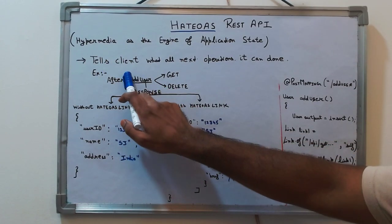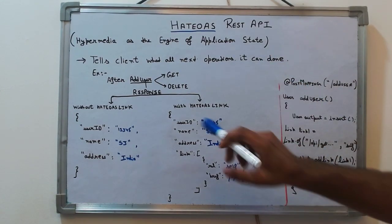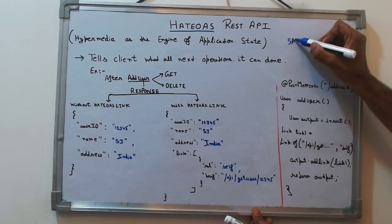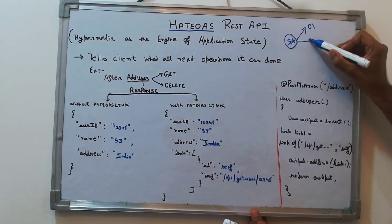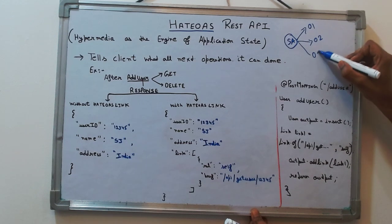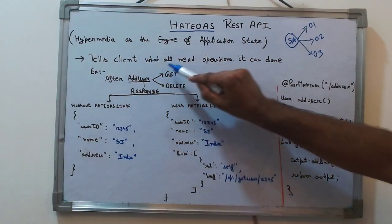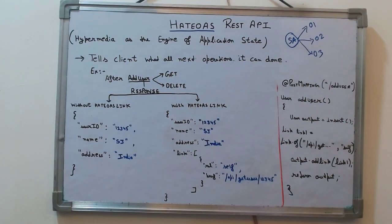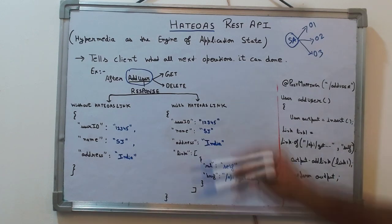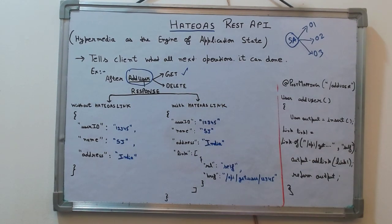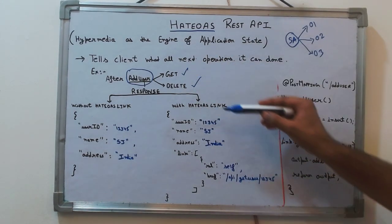In simple terms, HATEOAS tells the client what all next operations can be done. For example, let's say you are at state A — from this state you can perform operation one, operation two, or operation three. After adding a user, what can you do? You can make a GET call to fetch the user's details, or you can delete them — so these two operations are available.